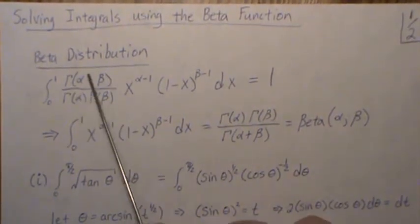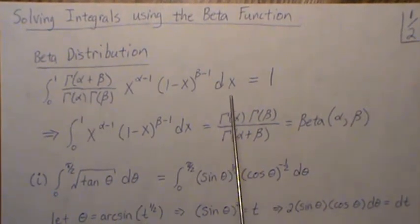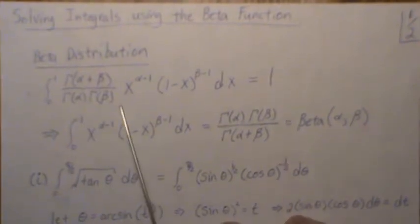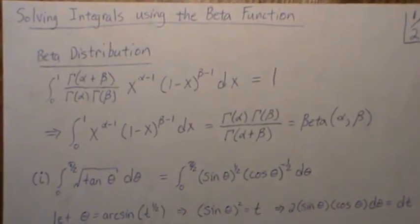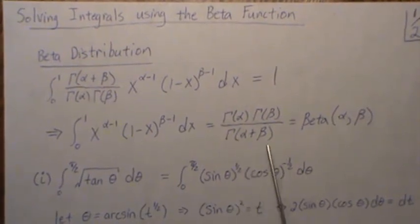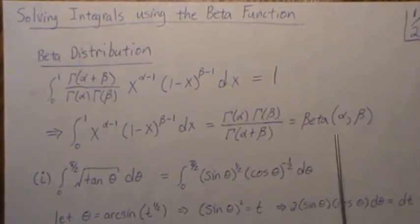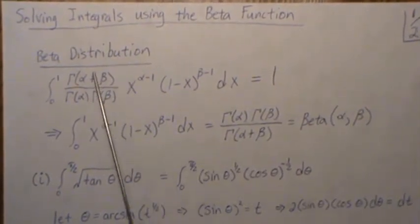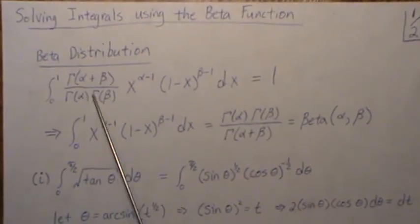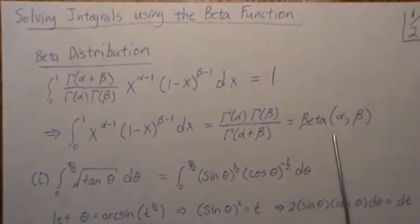Now notice that these are constants in the x world, so if we multiply those to the other side and then divide, we get the following. This piece right here is called the beta function, so this is the beta distribution and of course it has 1 over the beta function as a constant, and this is the beta function.